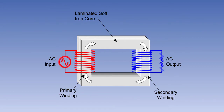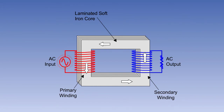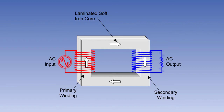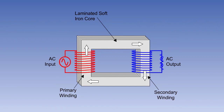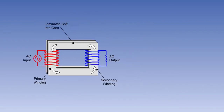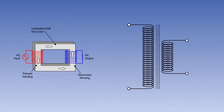If a load is placed across the terminals of the secondary winding, then an alternating current will flow in the circuit. In electrical diagrams, a transformer is usually indicated by the symbol shown here.